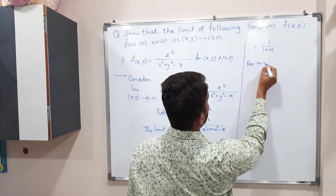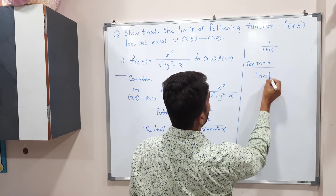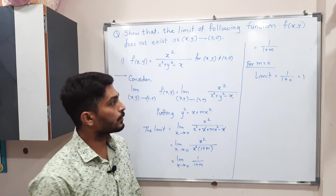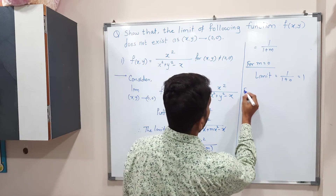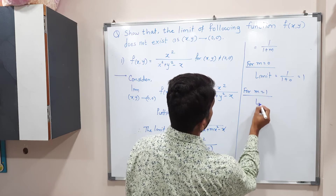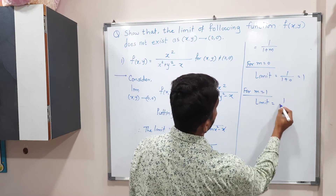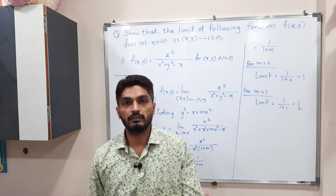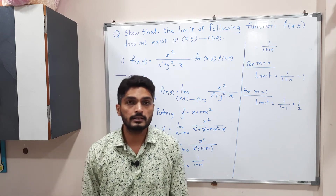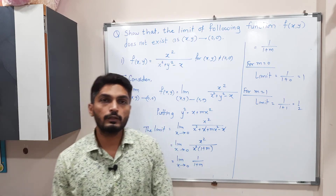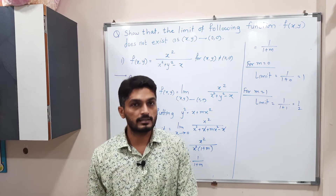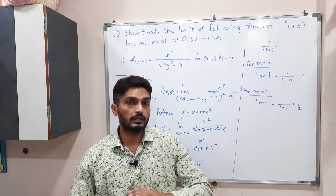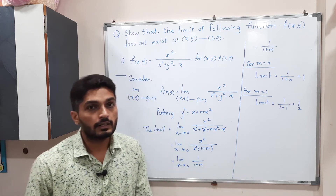So for m = 0, the value of the limit is 1/(1+0) = 1. For m = 1, the limit is 1/(1+1) = 1/2. For m = 2 or m = 3, we get different answers. That means for different values of m we are getting different values of the limit. This is a contradiction, because as we saw in the last video, if a limit exists it is unique.